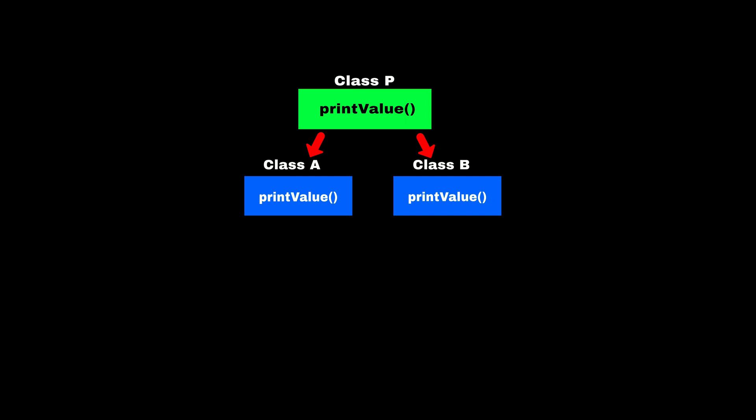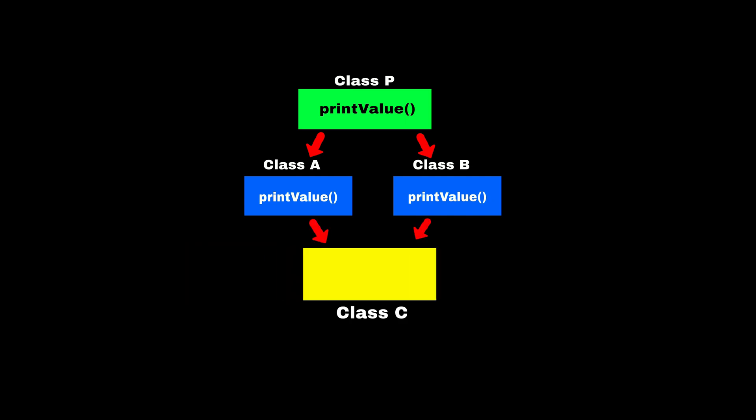These classes can write their own implementation of the print value method. Now suppose if multiple inheritance is allowed in Java and we are inheriting child class C from these two parent classes, then in the child class we will have two methods with the same name print value — one from parent class A and another from parent class B. So when we call the print value method, the Java compiler will get confused about which method it should call — the print value method of parent class A or parent class B.